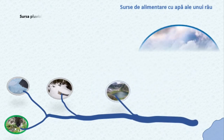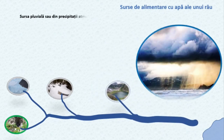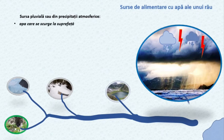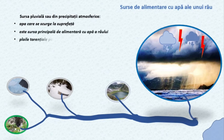Alimentarea din ploi este sursa principală a râurilor din zona de climă caldă sau chiar temperată. Ploile periodice sau cele obișnuite, ce durează timp îndelungat, asigură un debit constant al râului. Cele torențiale de scurtă durată pot determina fenomene hidrologice grave, precum viiturile urmate de inundații.